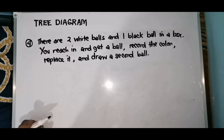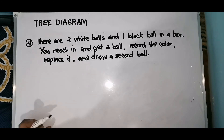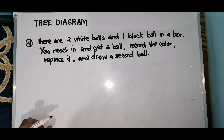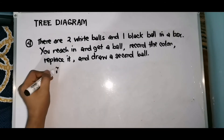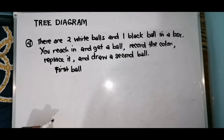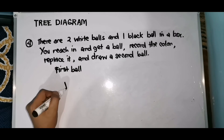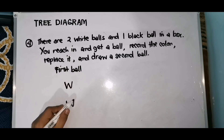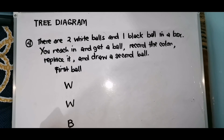For our last example: there are two white balls and one black ball in a box. You reach in and get a ball, record the color, replace it, and draw again. So the question is: what are the possible combinations for the first and second balls you draw? For the first ball, you can choose from two white balls and one black ball.